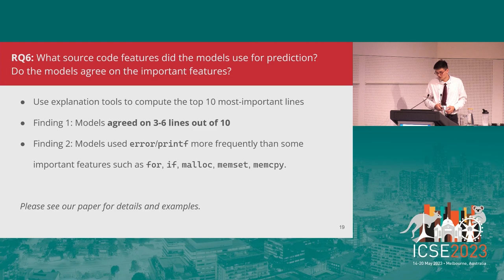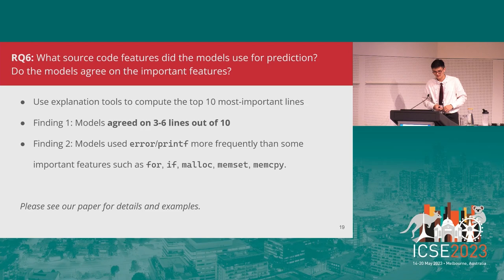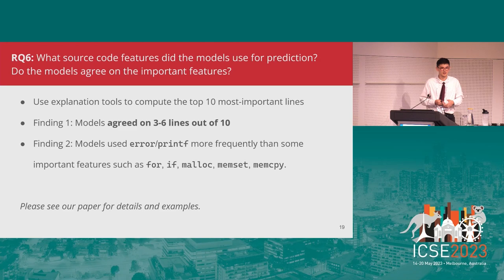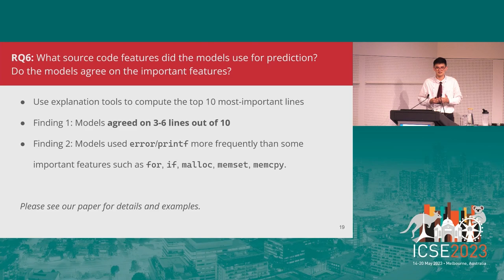For our final research question, we studied the source code features models used for predictions using explanation tools to compute the top ten most important lines in each program. We compared important lines between models and found which features appeared most frequently. Models agreed on three to six lines out of ten. Notably, models used features such as error and printf — which are not directly causing bugs — more frequently than important features such as for statements, if statements, memory allocations, and copies. This motivates research into why models focus on these features and how to redirect their attention to bug-relevant features.